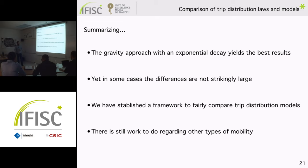To summarize: the gravity approach with exponential decay performs better than the rest, but in some cases the differences are not large. The main message is that we have established a fair framework to compare these models by separating the approach from the constraints, so that the same amount of information is introduced into each. A limitation is that we are only modelling commuting, so this comparison could be extended to other types of mobility.